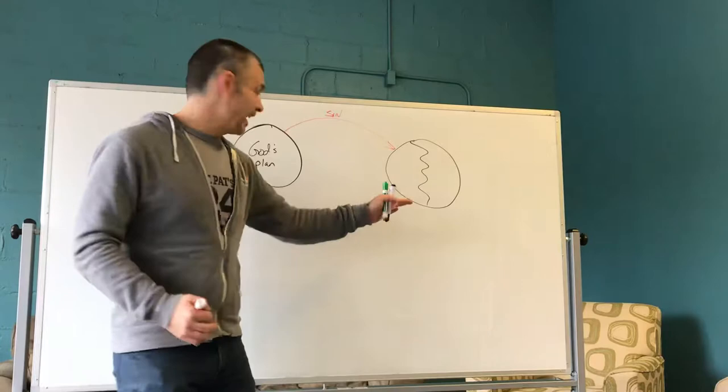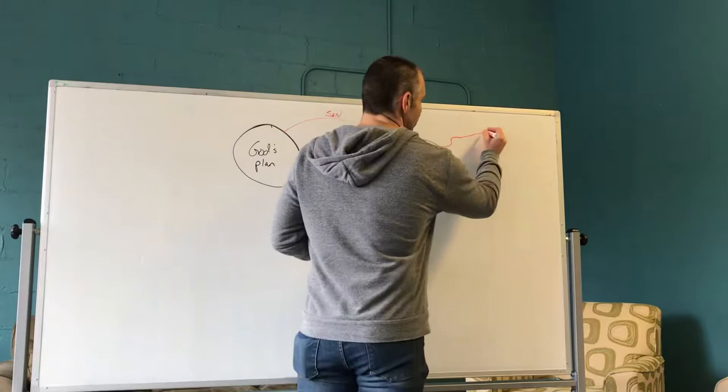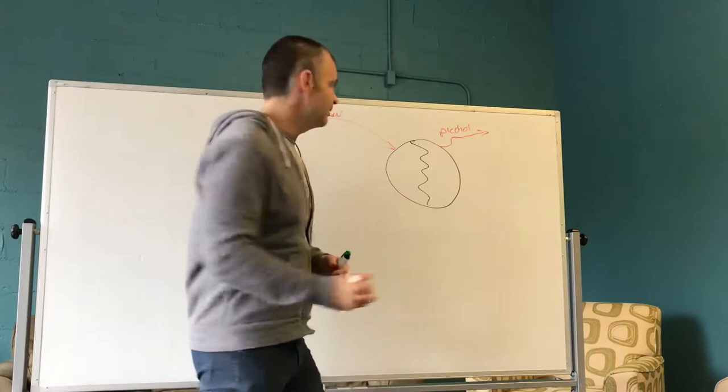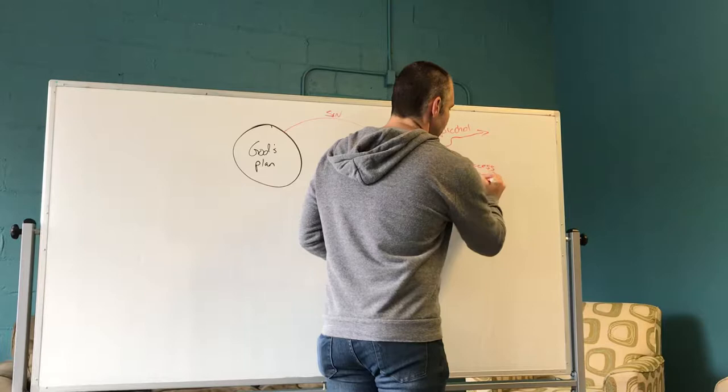Now what happens, because we don't like living in a broken world, we have this desire to get back to this perfection. What happens is we try to escape this brokenness. And some of us do it through alcohol or drugs. We try to escape that. Some of us do it through chasing success or money.